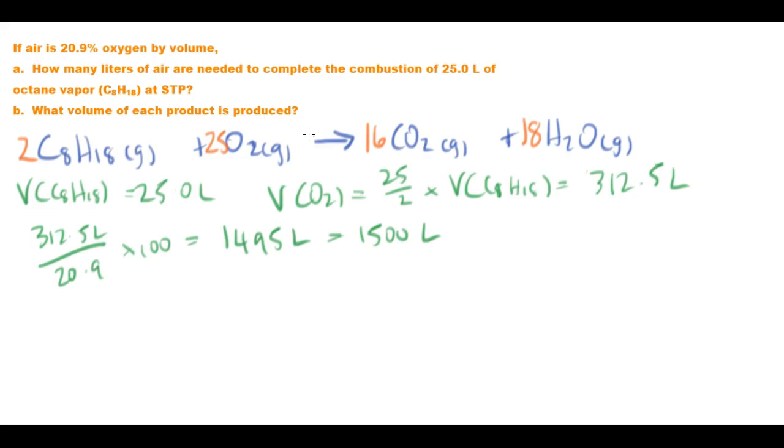Now, the volume of each of the products. So we produce carbon dioxide and water vapor. So we're going to use the same ratio. So let's put this in yellow. So we're going to use the same ratio.